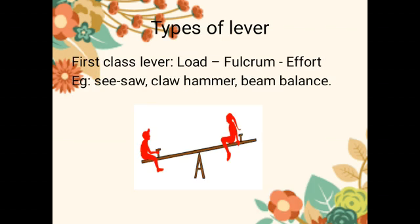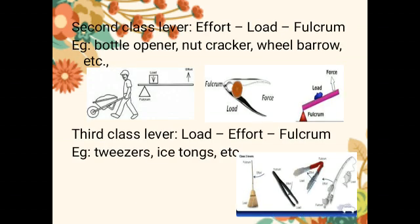There are three types of levers available: first class lever, second class lever, and third class lever. In the first class lever, the fulcrum is found between the load and the effort. Examples of first class levers are a seesaw, claw hammer, beam balance, etc. In the second class lever, the load is present between the effort and the fulcrum.